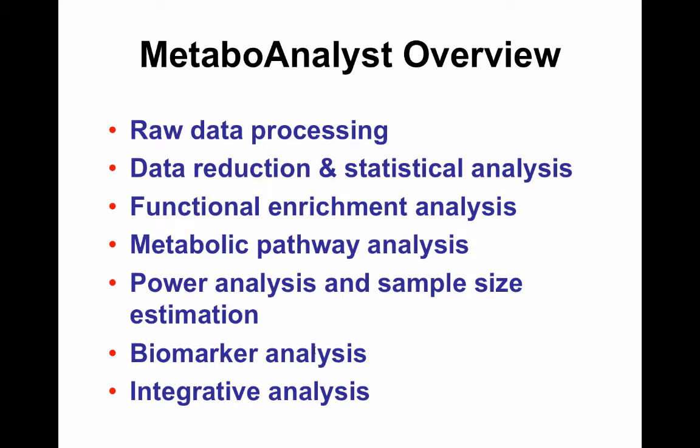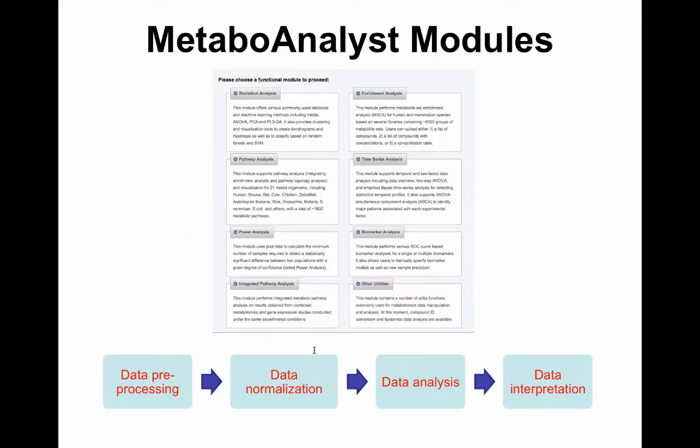We're going to go through data processing, data reduction, functional enrichment analysis, metabolic pathway analysis, power analysis and sample size estimation, biomarker analysis, and briefly touch on integrated analysis. There are eight modules total in MetaboAnalyst. The general path is: pre-process and clean data, normalize it to make it more Gaussian, perform multivariate statistical analysis, and then interpret results through pathway or metabolite set enrichment analysis, linking to databases and PubMed.